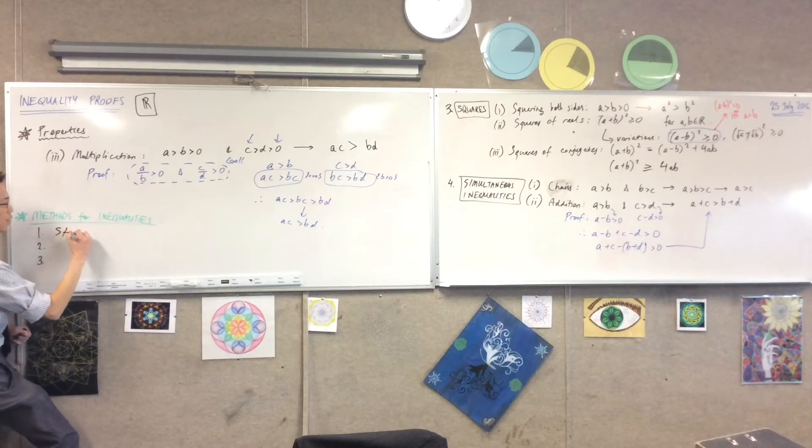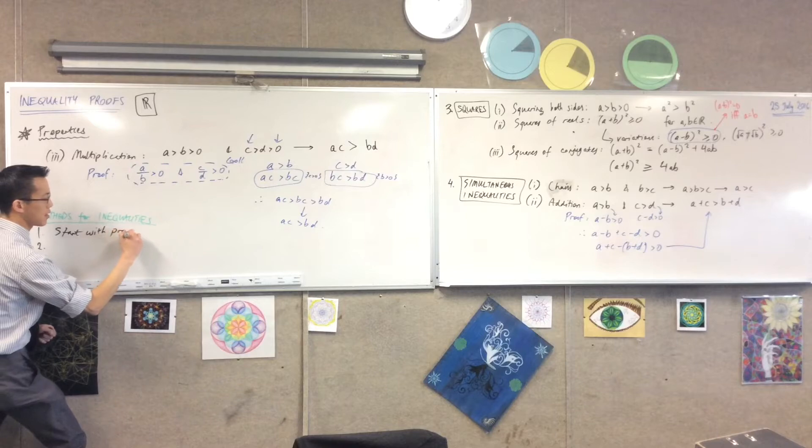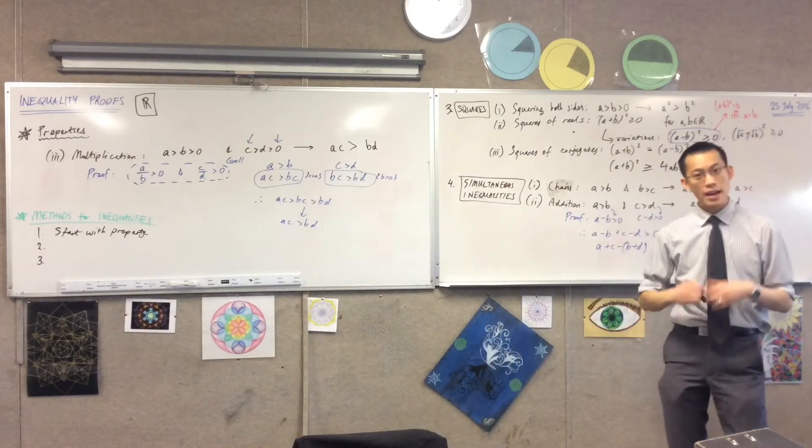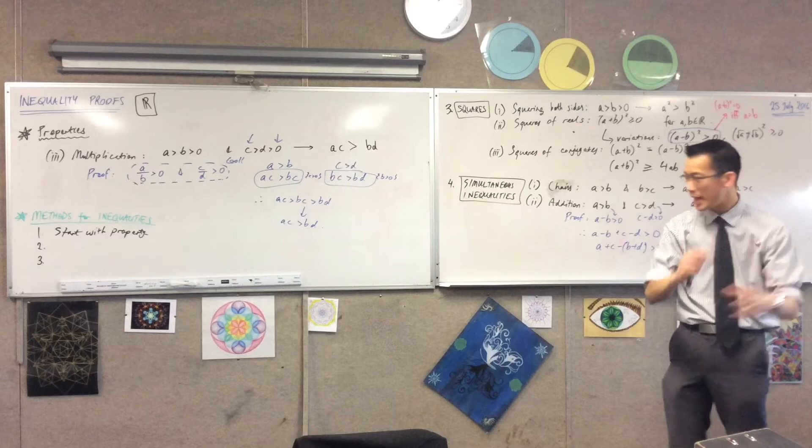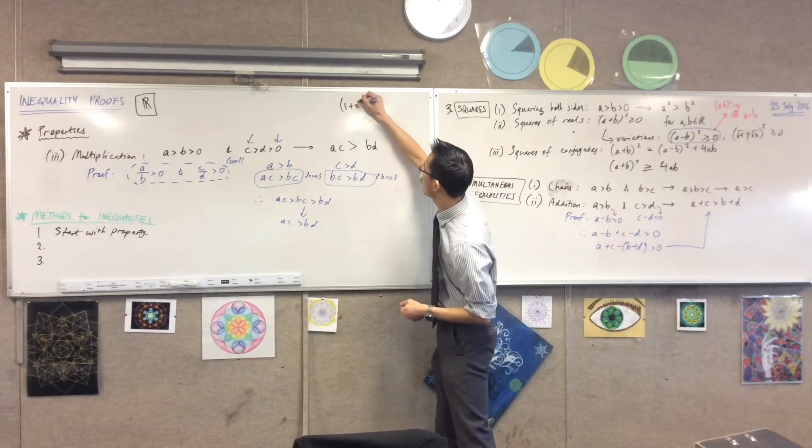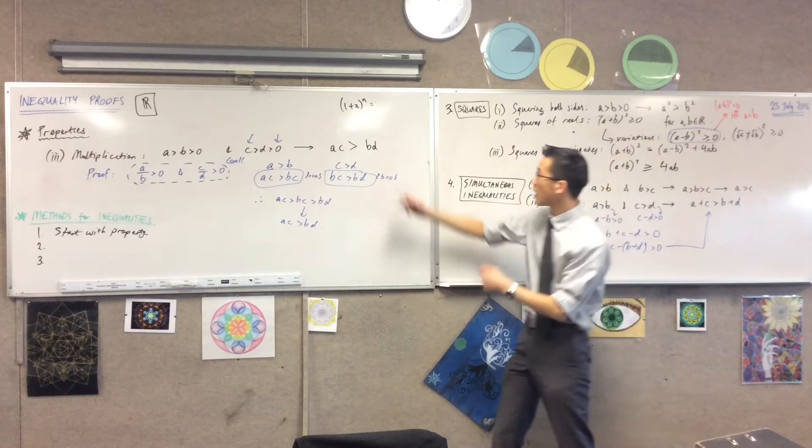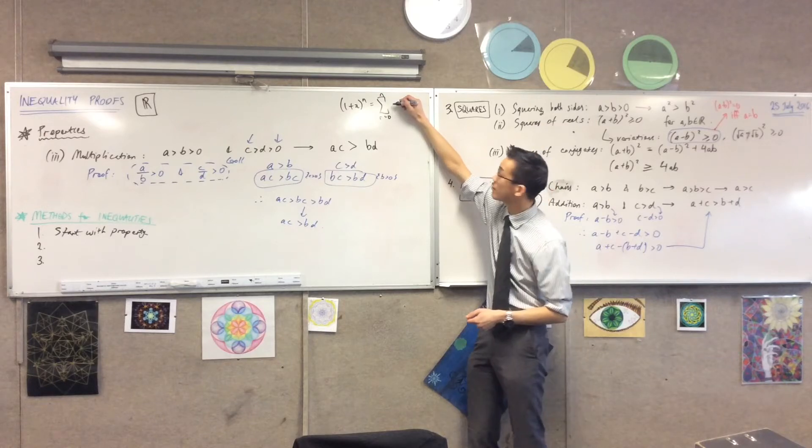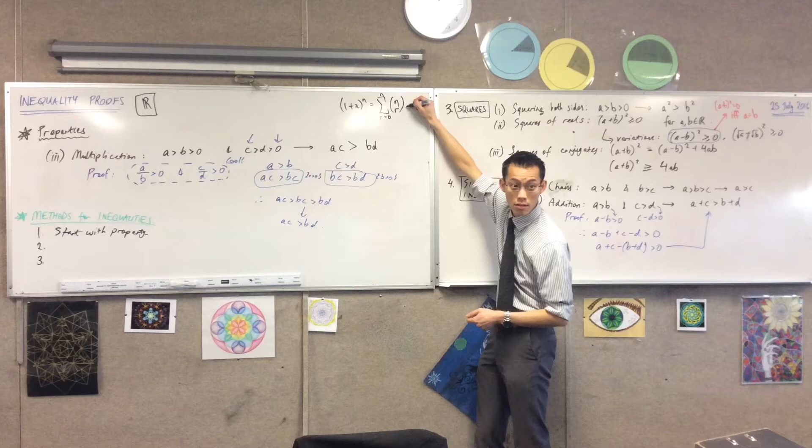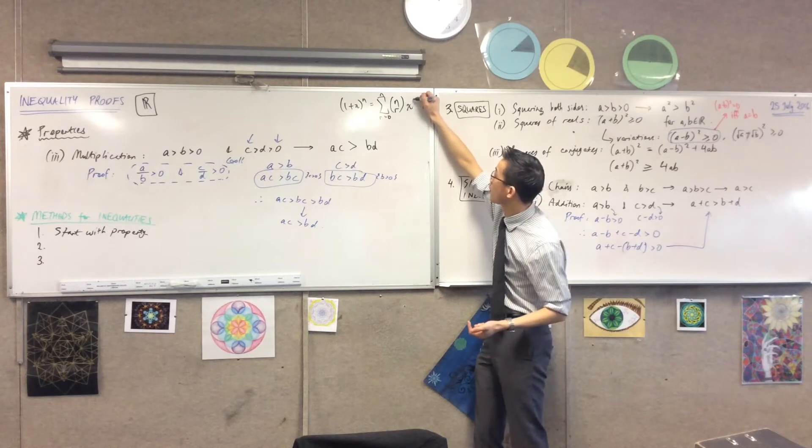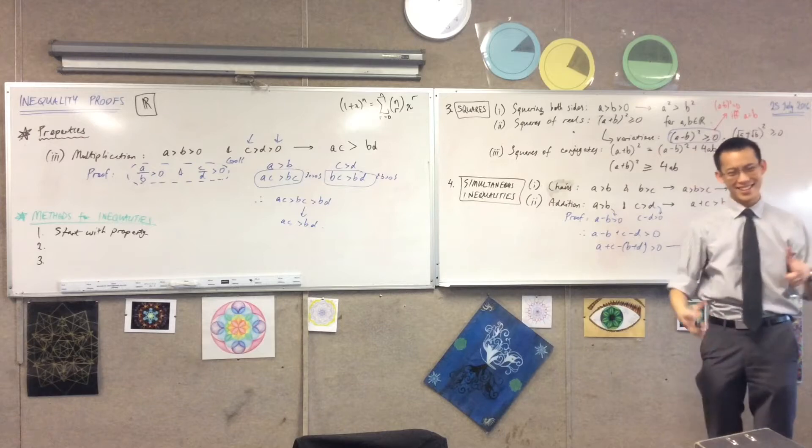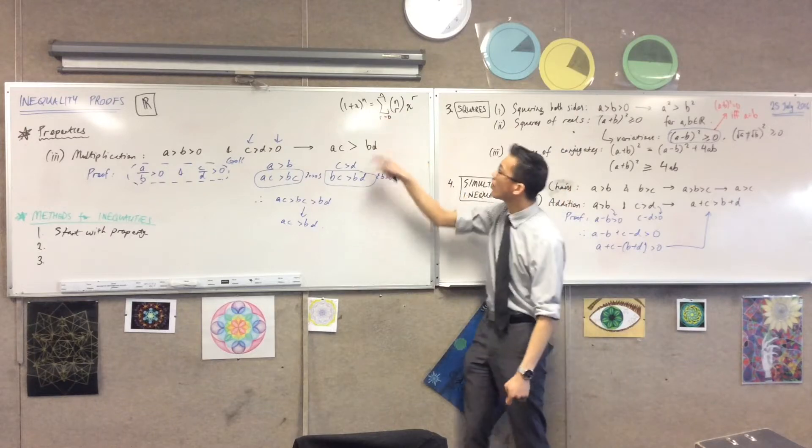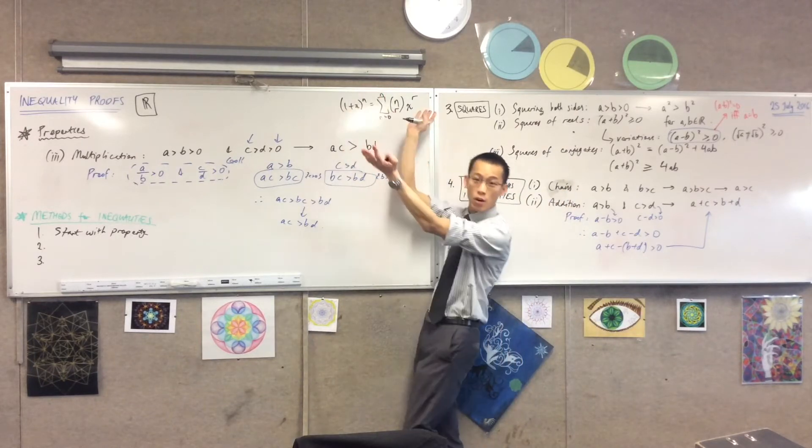Number one is just start with one of these properties. In binomial theory we look at binomial identities, right? Frequently the first line you write down is just some version of the binomial theorem. You write down this guy is just the sum from zero to N of what? N choose R of... I'd probably say X to the R. So this might be your starting line, and then you say, for a particular value of X, or what happens if I square the whole thing or whatever.